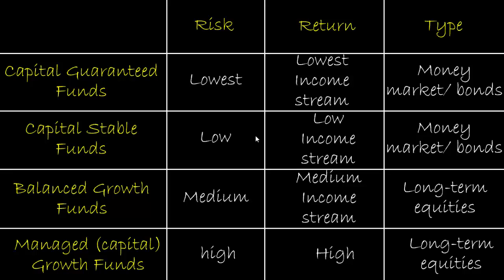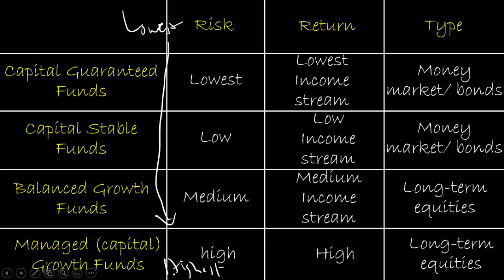Therefore, we rank these four fund categories based on the level of risk, starting from the lowest to the highest. Consequently, the level of return also goes from the lowest to the highest.